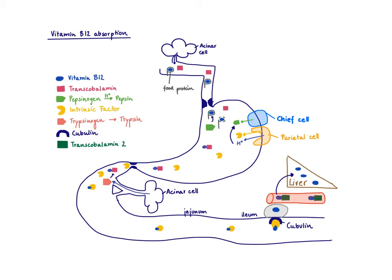Vitamin B12 is very important as it serves as a cofactor to recycle tetrahydrofolate, which is essential for DNA synthesis. If you do not have enough vitamin B12, we cannot make DNA properly. The first cells to suffer from impaired DNA synthesis are red blood cells, as these are the fastest dividing cells. Therefore, vitamin B12 deficiency can lead to anemia — specifically megaloblastic anemia.